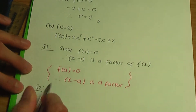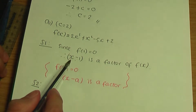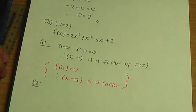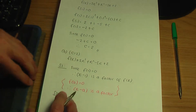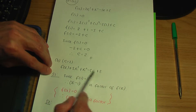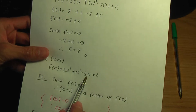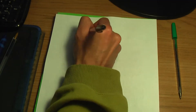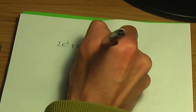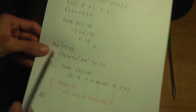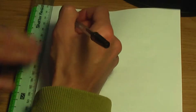We've been given the factor x minus 1. This takes us to step number 2. In step number 2, we use algebraic division and divide the polynomial by the factor. So let's divide algebraically f of x, which is 2x cubed plus x squared minus 5x plus 2, by the factor x minus 1.